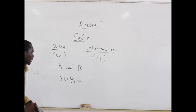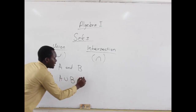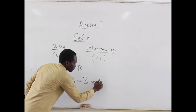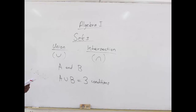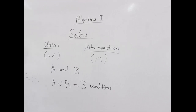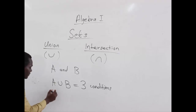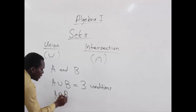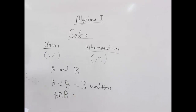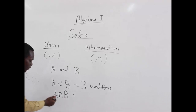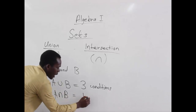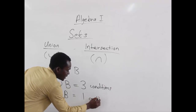Let's take note of this. A union B tells us of three conditions — we'll see those very soon. And when we have A intersection B, we don't repeat members in A which are also found in B, or members in B which are also found in A. So for intersection of sets, we have got one straight condition.